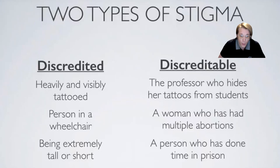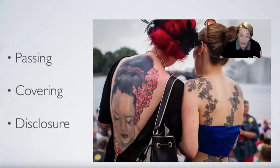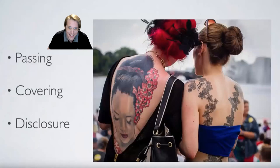This ties to the Du Boisian idea of double consciousness, and is really worth having a conversation about. The professor may be discredible to her students but discredited when she shows her tattoos — or when someone discloses a disorder and we retrospectively label them as deviant. There are three different ways of managing or concealing stigma: passing, covering, and disclosure.